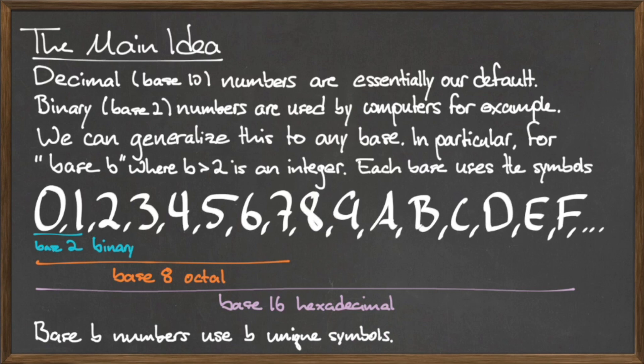And the base 16 system, also known as hexadecimal, uses the symbols 0 through 9, as well as the first 6 letters of the alphabet. The number of the base B determines how many symbols that base uses. For example, base 10 uses 10 symbols, base 8 uses 8 symbols, base 16 uses 16 symbols, and so on.